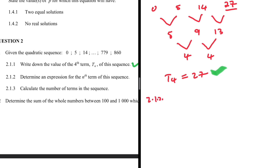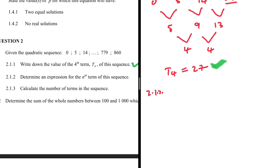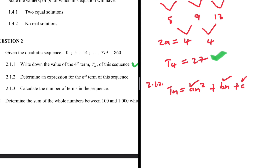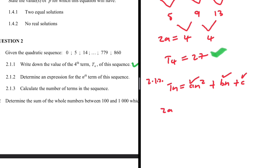Determine an expression for the nth term of this sequence. For a quadratic sequence, tn = an² + bn + c. We need to find a, b, and c. We know that 2a equals the second common difference, so 2a = 4, which means a = 2.